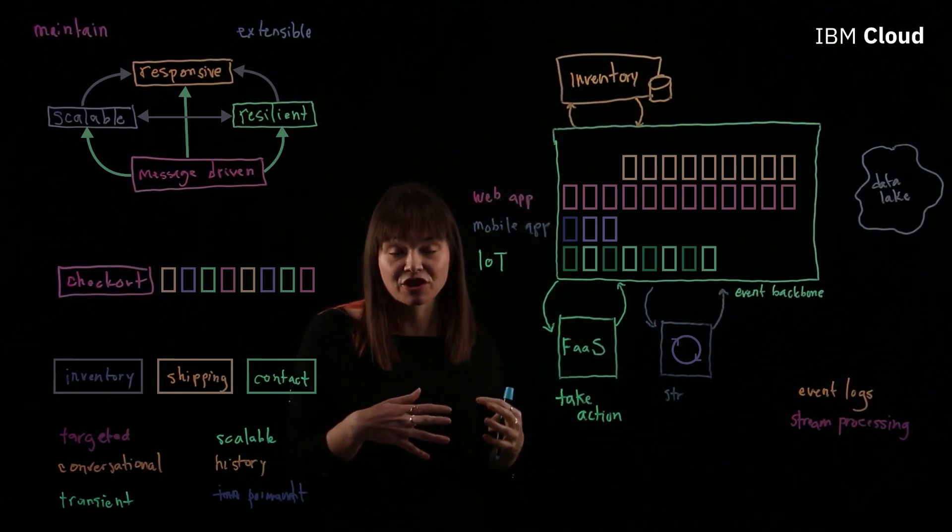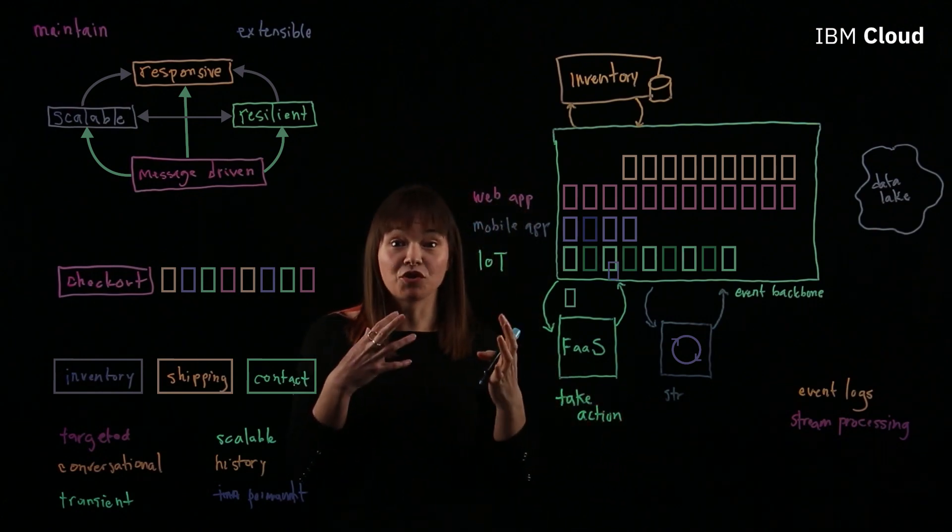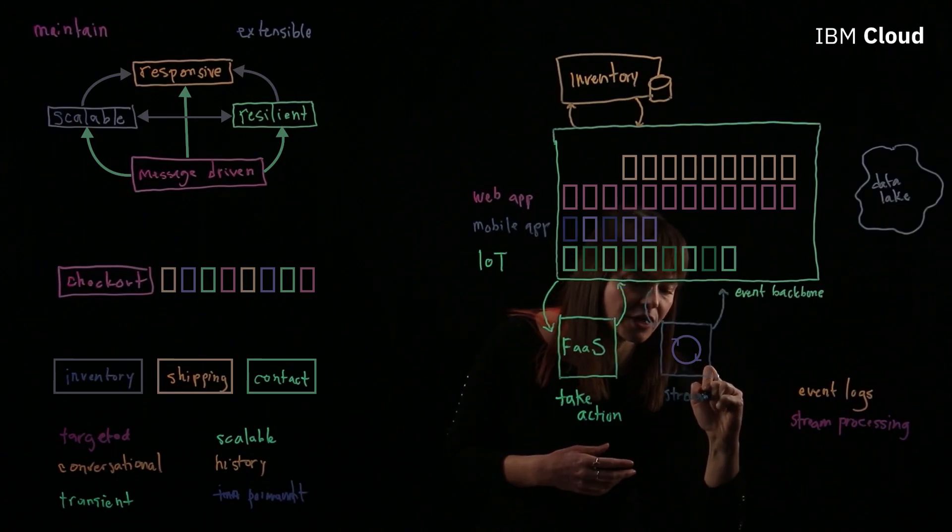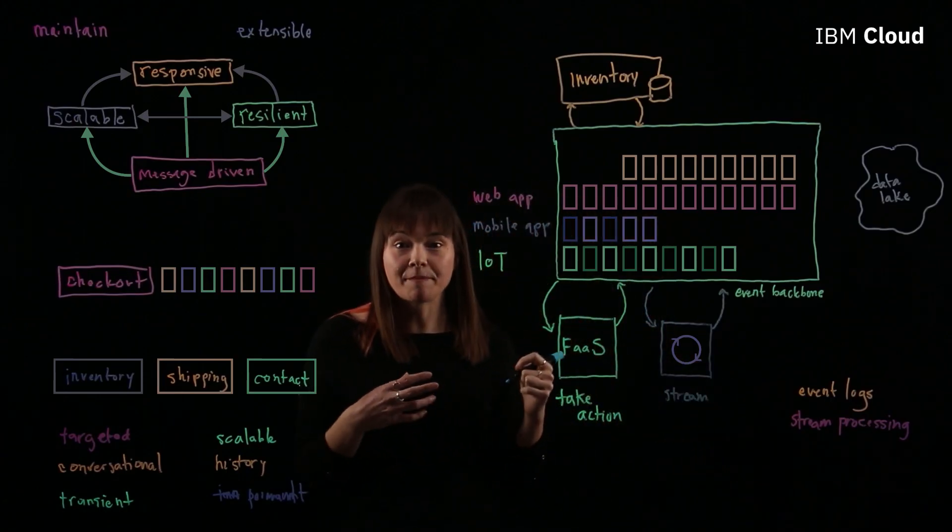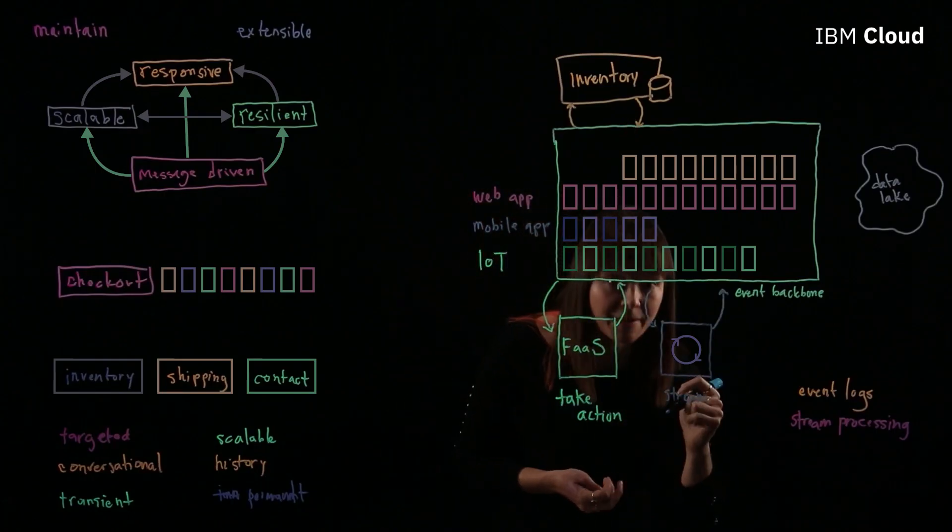So that stream processing is really powerful and gives real-time calculations. Like if it's a ride share app, you know exactly how far away your ride is. But it can also be used to implement business rules and business policies, and it can be used for real-time analytics.